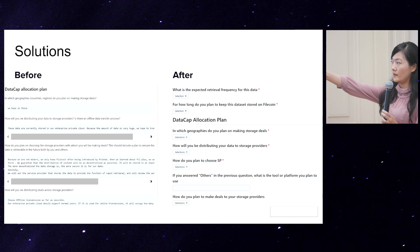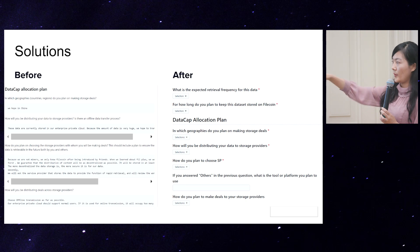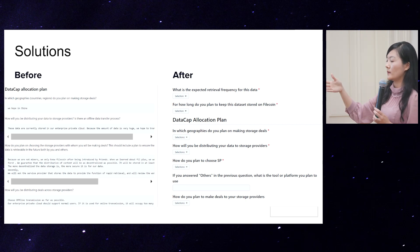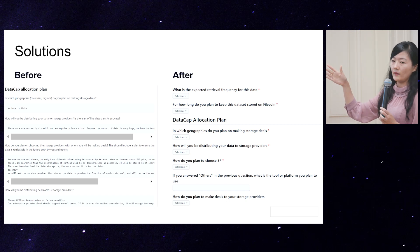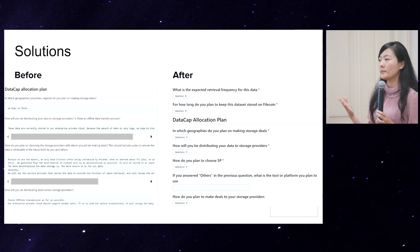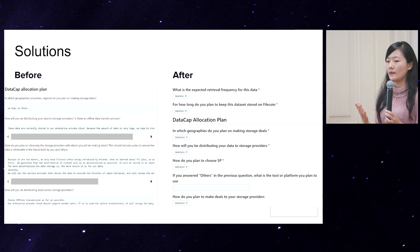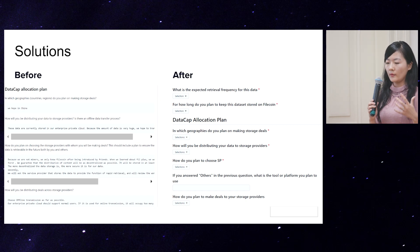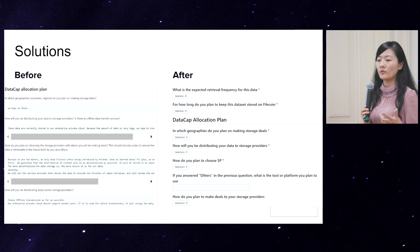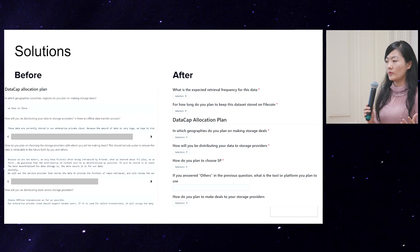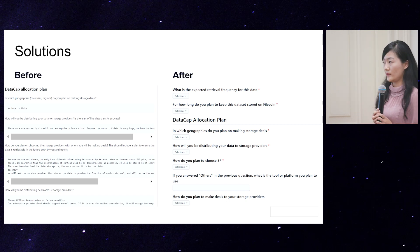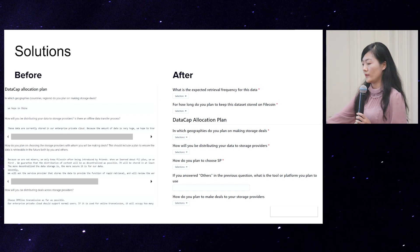So essentially, that's the solution. Before, you could write anything. After, there's a clear breakdown of questions — for example, 'In which geo do you plan to make a storage deal?' with a location picker where you can select multiple options. 'How will you distribute your data to storage providers?' also offers a dropdown: are you using S3 or a hard drive? This will also educate clients — maybe they don't know the right answer, but when you have an anchor, you can collect way more information and educate them at the same time.